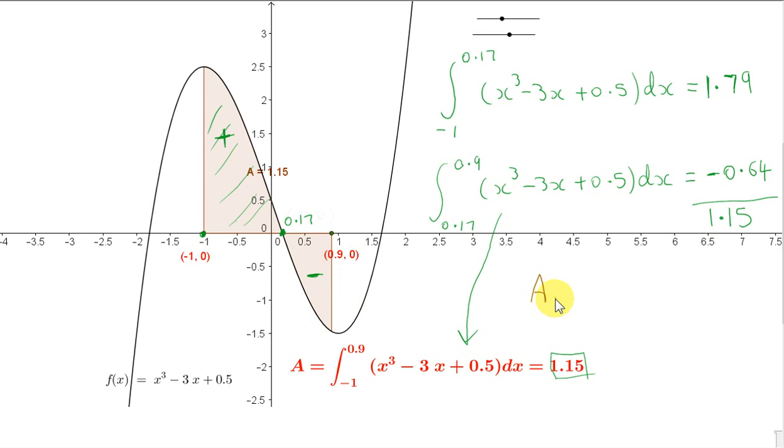Now, since we're after the total area enclosed between the graph and the x-axis, we want to treat this as a positive quantity. So the total area will be 1.79 plus 0.64. So we just make this quantity here positive. We make this integral positive. So we get 2.43. So this is something that we will be doing quite a bit.